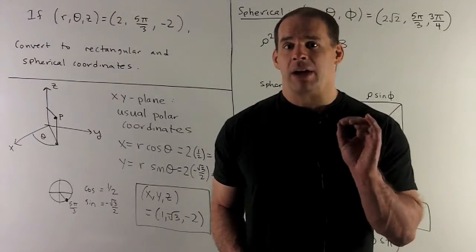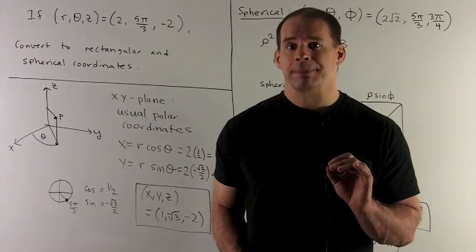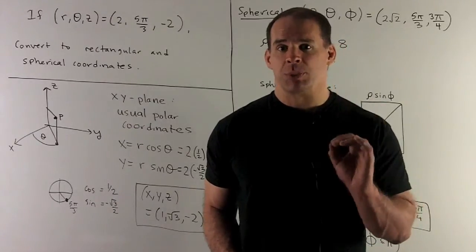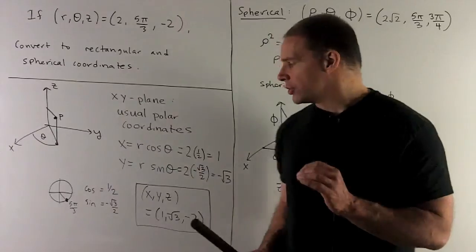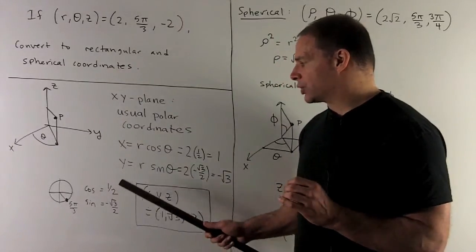So to get 5 pi thirds sine and cosine, I'm going to want those numbers with the signs put in for the fourth quadrant. So I'll get a half and minus square root of 3 over 2.